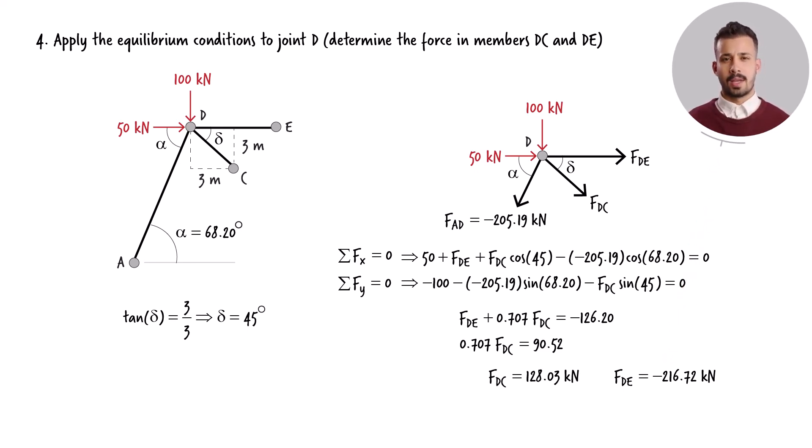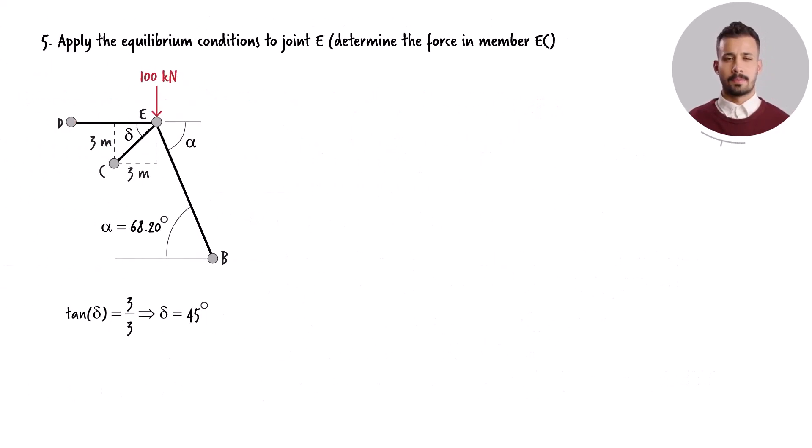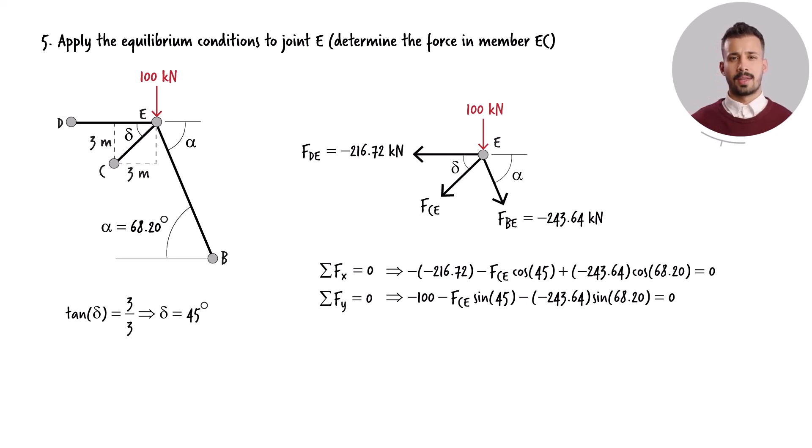Thus far, we've calculated the forces for six out of the seven truss members. The final force can be determined at joint E. Here is the free body diagram of the joint. Even though it's possible to formulate two equilibrium equations for the joint, only one equation is necessary to find the remaining unknown force, as both equations reduce to the same expression.